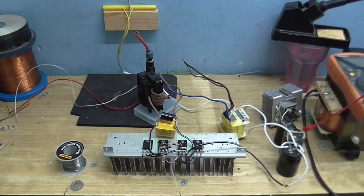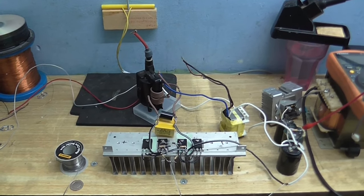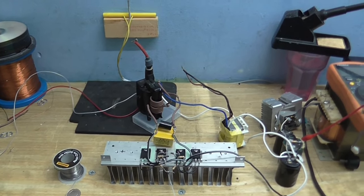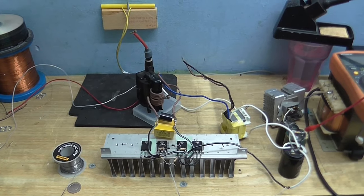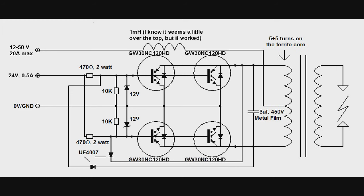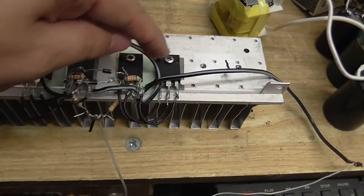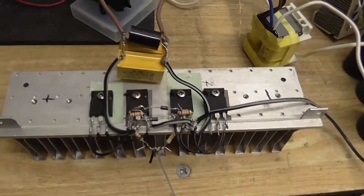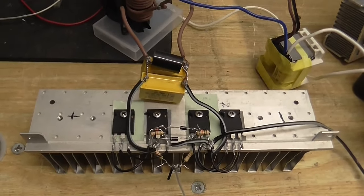So, there we go. There's my IGBT ZVS driver. Works pretty good. Now, usually I'd put in a schematic, but I don't really think there's any point because this is just the ordinary ZVS flyback driver circuit. Except I've replaced the MOSFETs with IGBTs. And also, I've paired them up. So, I've got these two in parallel, and then these two in parallel, and that's basically it. Anyway, until next time, goodbye.